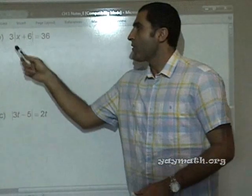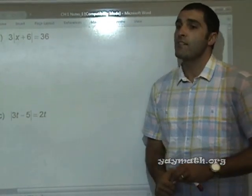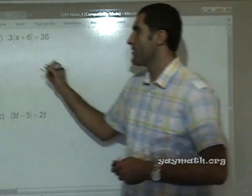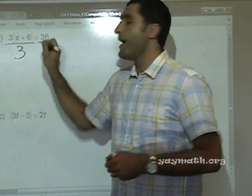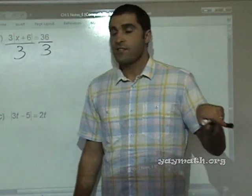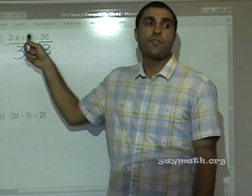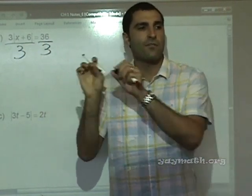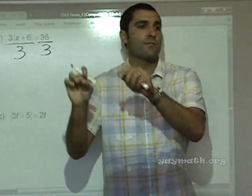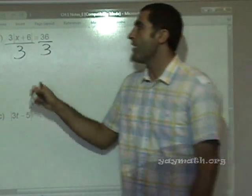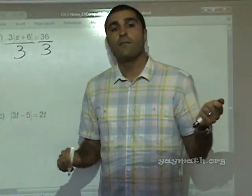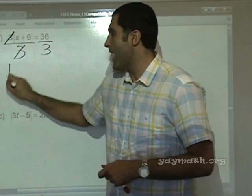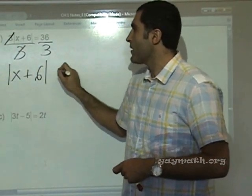Next problem: 3 times absolute value of x plus 6 equals 36. We need to simplify first. What should we do to both sides? Divide by 3. So I'll go ahead and do that. The reason we don't distribute the 3 is because in the last problem we actually create two equations, and the 3 would have to multiply by both of those. Better than that, we can just simplify by dividing 3 on both sides, leaving absolute value of x plus 6 equals 12.